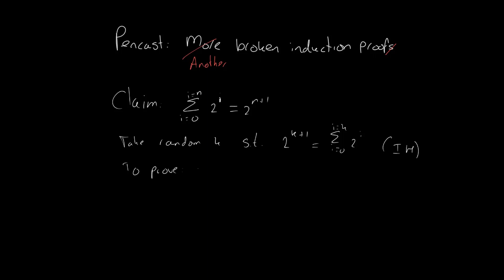Now what do I need to prove? I need to prove, that's the way induction works, right? That if it holds for k, it should also hold for k plus 1. So I need to prove that if I sum the first k plus 1 entries, the result is 2 to the power k plus 2. But what is 2 to the power k plus 2?